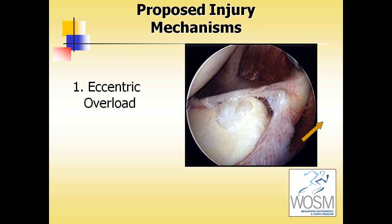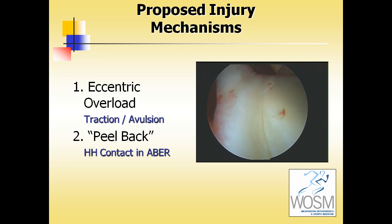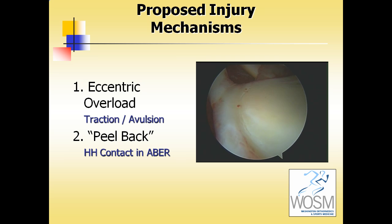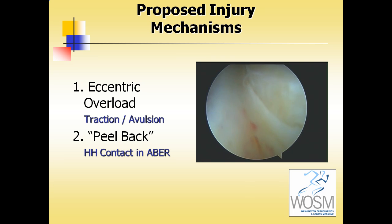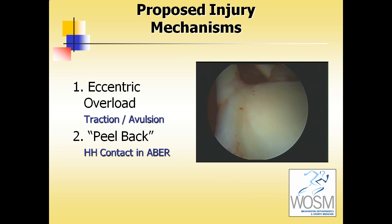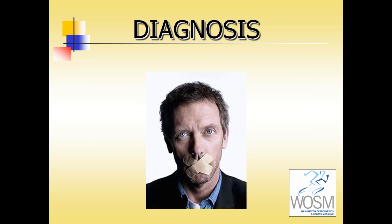There are a number of proposed injury mechanisms including eccentric overload during various phases of throwing or with a traumatic event, and the peel-back mechanism. In throwers, when they get up into the abduction external rotation position, the posterior superior labrum can peel off the posterior superior glenoid rim, as shown here.